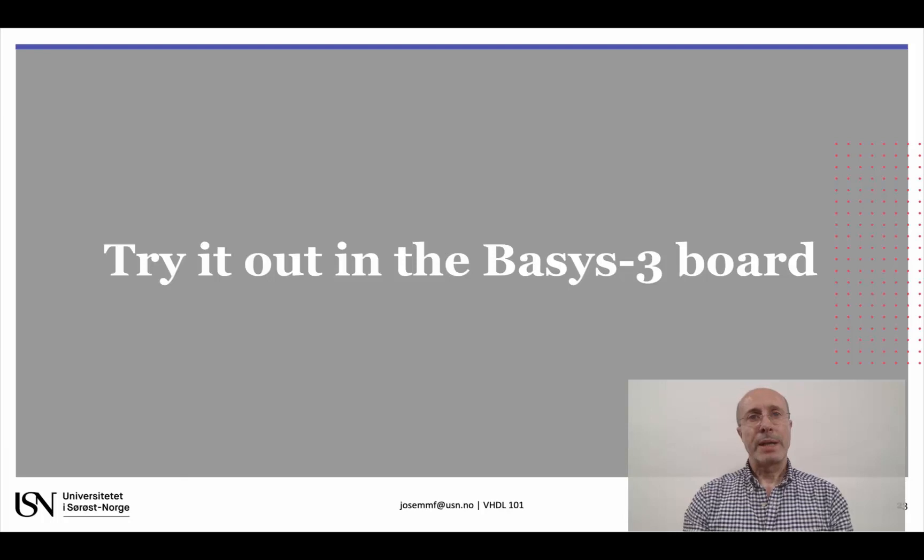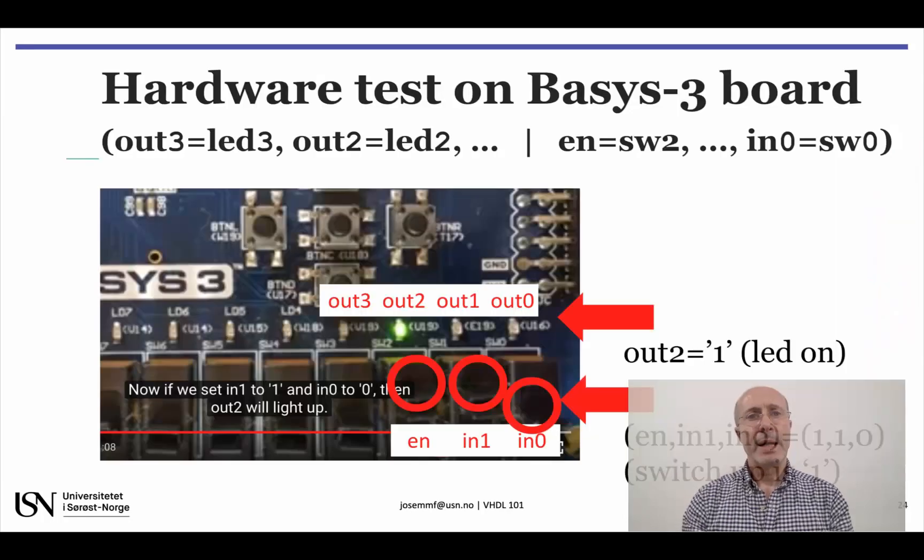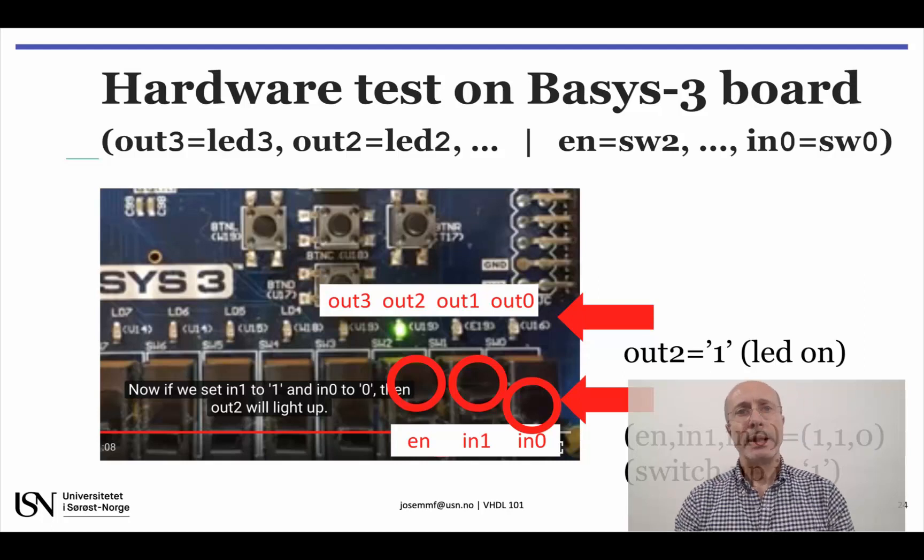The last stage is to try it out on the Basys-3 board. A brief video showing the operation of the circuit comes up next in this playlist. The switches used are those at the rightmost positions in the bottom right of the Basys-3 board, and the LEDs are those placed immediately above, as shown in this slide.